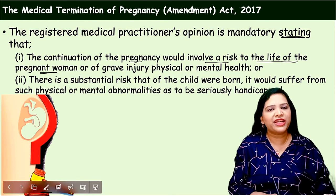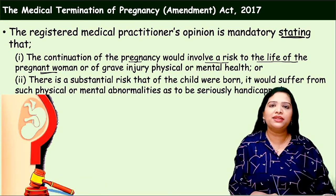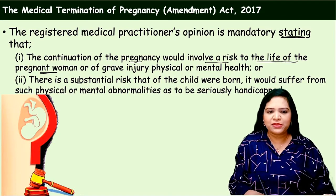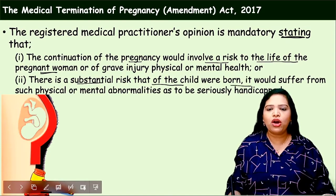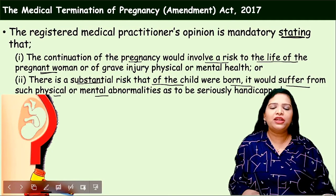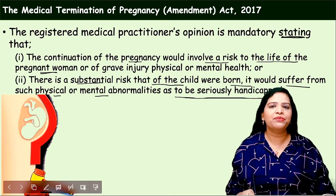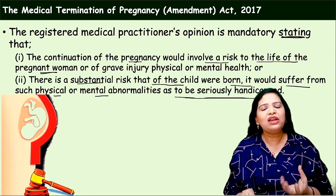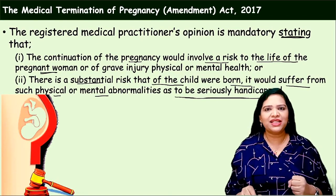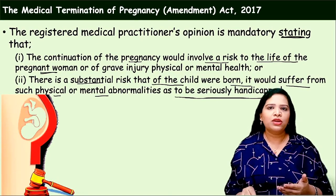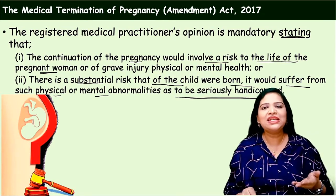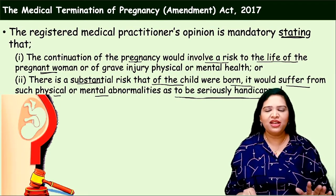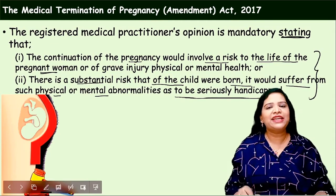What should be in the practitioner's opinion? The registered medical practitioner's opinion is mandatory stating that continuation of the pregnancy would involve a risk to the life of the pregnant woman, or there is a substantial risk that if the child were born it would suffer from physical or mental abnormalities as to be seriously handicapped — such as chromosomal abnormalities, hydrocephalus, malformed face, limbs, or extremities. The reason should be clearly mentioned by the doctor.